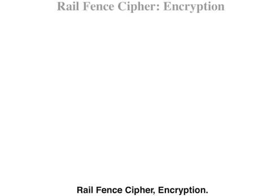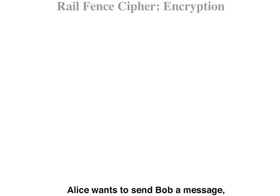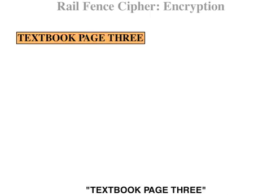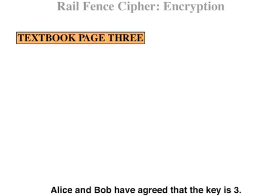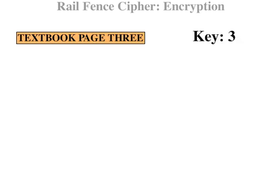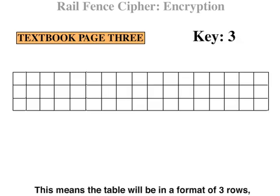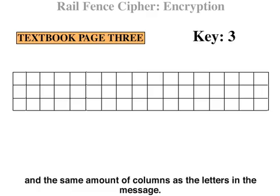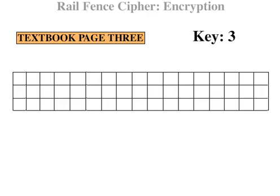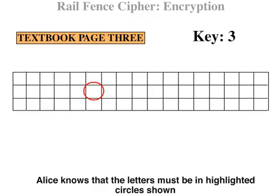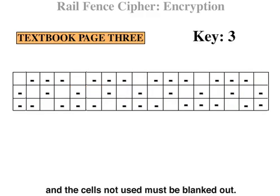Rail fence cipher encryption. Alice wants to send Bob the message 'Textbook page 3.' Alice and Bob have agreed that the key is 3. This means the table will be in a format of 3 rows and the same number of columns as the letters in the message. Alice knows that the letters must be in the highlighted circles shown and the cells not used must be blanked out.